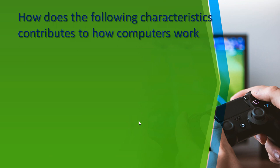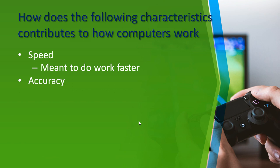Next question: how do the following characteristics contribute to how computers work? First, speed — it is meant to do work faster. The main goal of computer experts in creating computing devices was to make human work faster. If a device is slow, that goal isn't achieved. For example, if searching for a file takes a minute to render, it might be faster to search through physical hard copies manually.